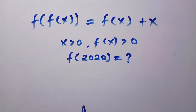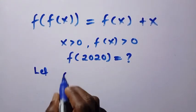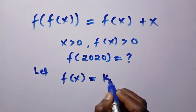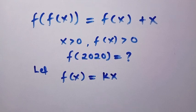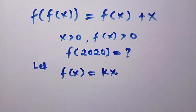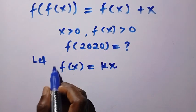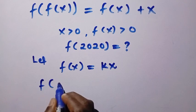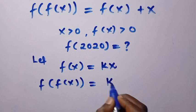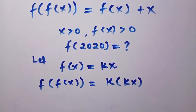The relationship here is a linear form. Suppose we assume f(x) equals kx, where k is a constant. Since it's in a linear form, for the composite f(f(x)), if we plug f(x) = kx into another f, this becomes k times (kx).